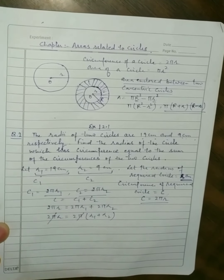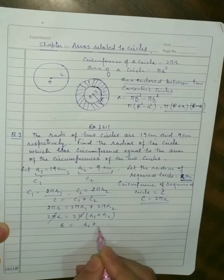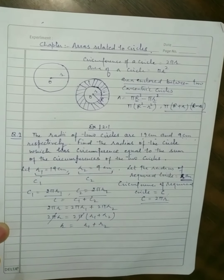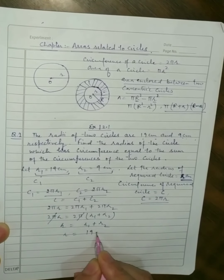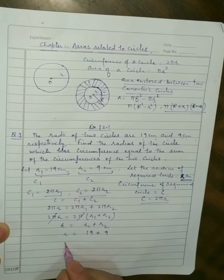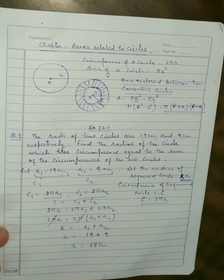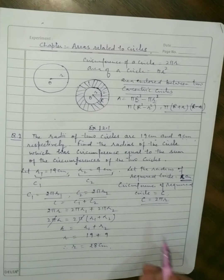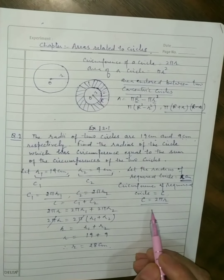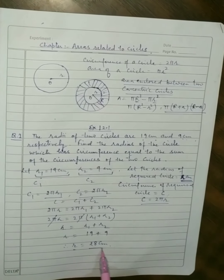2π cancels out, so R = r₁ + r₂ = 19 + 9 = 28 cm. The radius of the required circle is 28 cm.